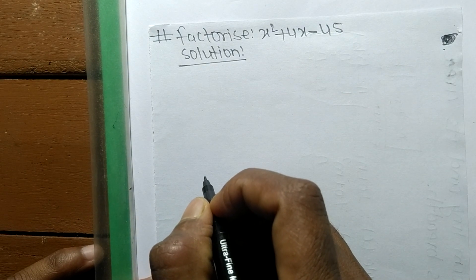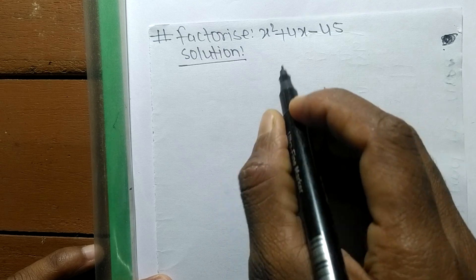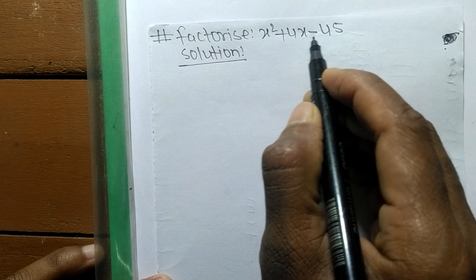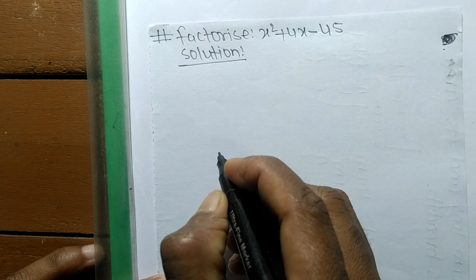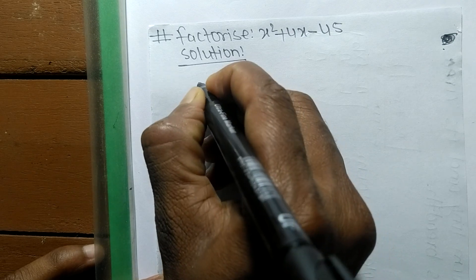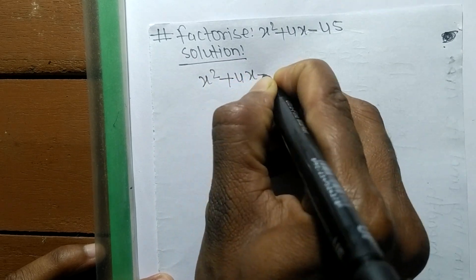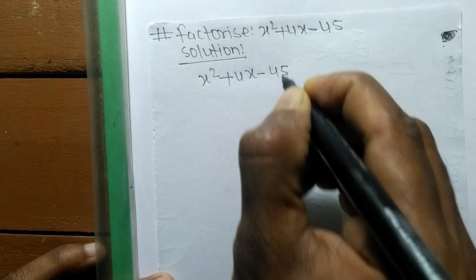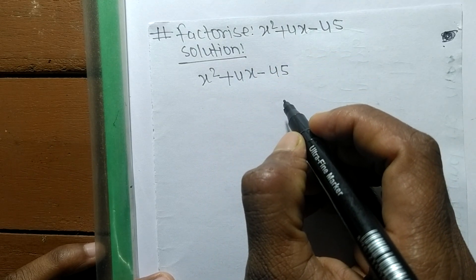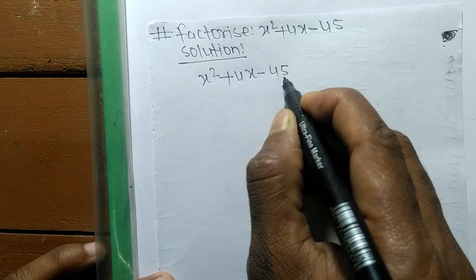So today in this video we shall learn to factorize x² + 4x - 45. For the solution of factorize x² + 4x - 45, first we have to find out the prime factors of the number 45.